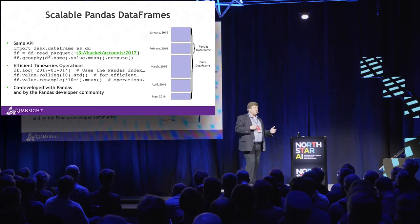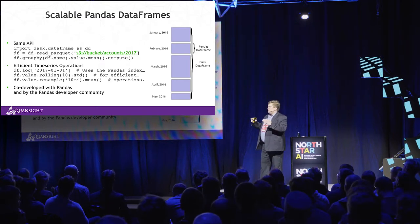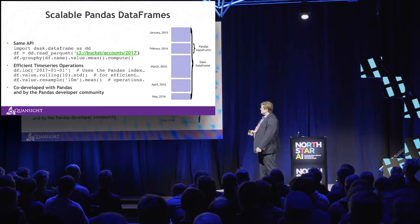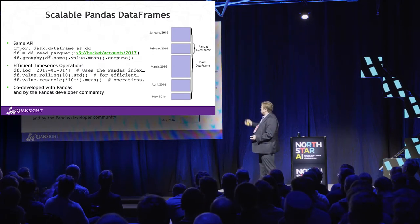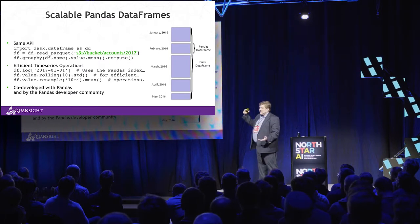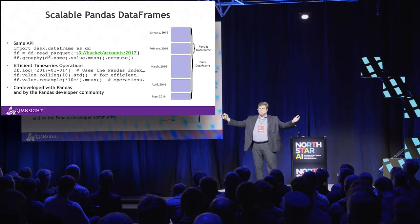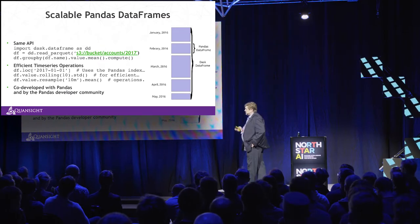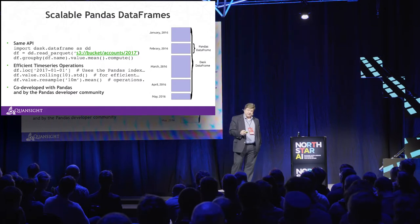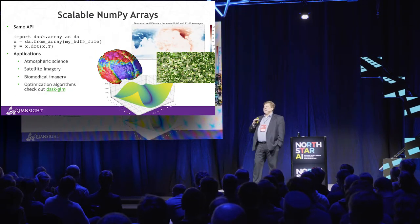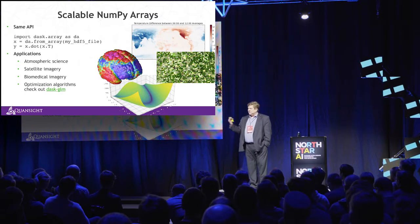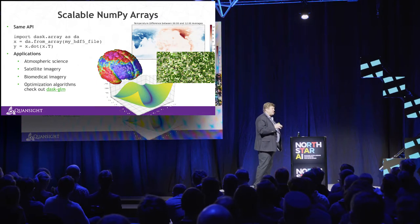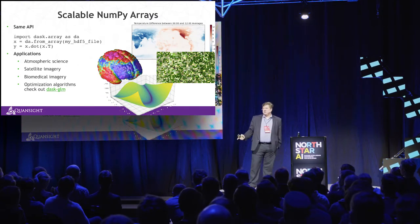For example: read a parquet file, group by and pick a column, compute the mean — all that is building up a graph of tasks to compute across a cluster of machines, and then compute() does the work. You can do efficient time series with Pandas-like indexing. It's co-developed with the Pandas community so it maintains feature compatibility, and as Pandas goes to 2.0, Dask easily follows. Dask also adds the scalable NumPy array — we started Anaconda with the goal of scaling NumPy and Pandas, and Dask is the result of that.